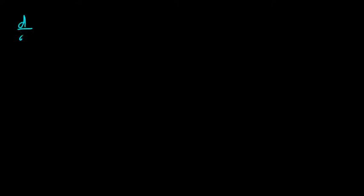First, let's start with the derivative with respect to x of the hyperbolic sine of x — sinh(x). If you take this derivative, it's actually really simple. You just get the hyperbolic cosine of x. Totally worth memorizing.